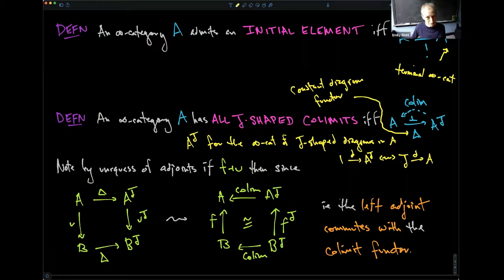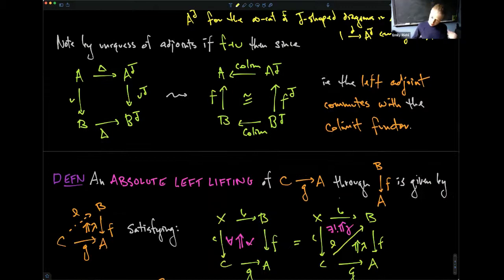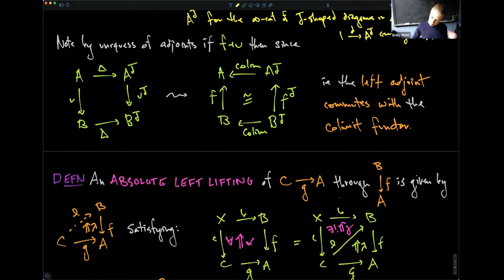The problem with this definition is that it's not quite sufficiently general: there are infinity categories that have certain colimits of a particular shape but not necessarily all colimits of that shape. For that reason we need to be able to talk about the colimit of a single diagram without asserting the existence of a colimit functor for every diagram.